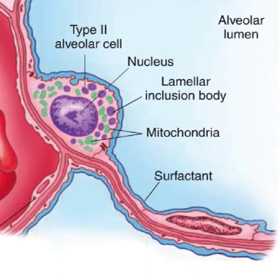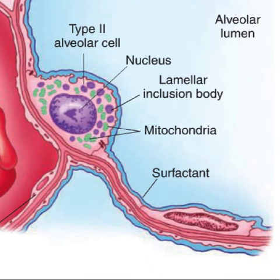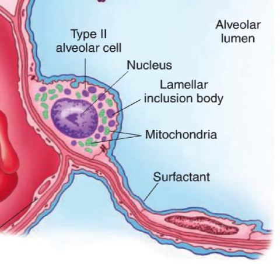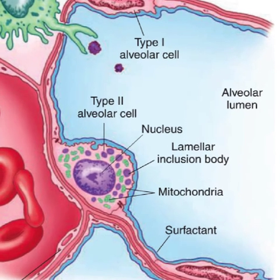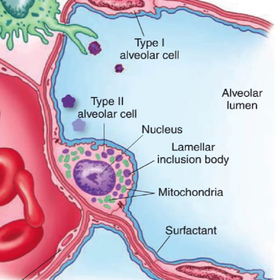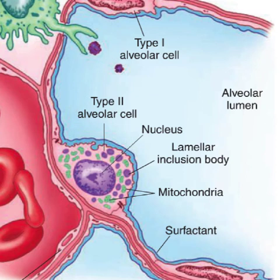Type 2 alveolar cells are able to divide and can differentiate into type 1 and type 2 pneumocytes when they divide, making them similar to stem cells in the epithelium. Due to their shape, they only occupy 5% of the alveolar surface area.